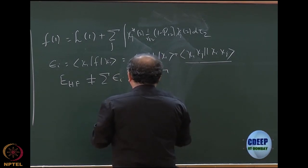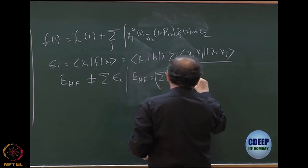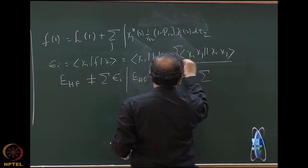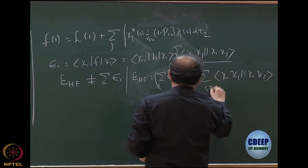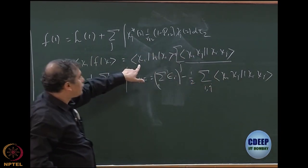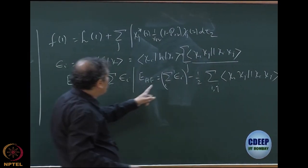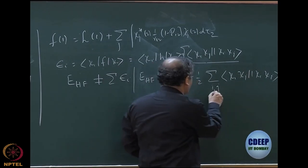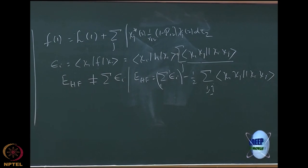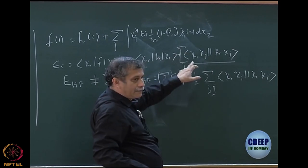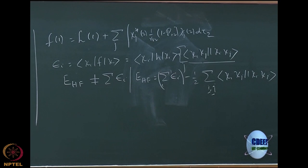The Hartree-Fock energy equals the sum of orbital energies minus half of the sum over i and j of the anti-symmetrized two-electron integrals. So when I write E_HF, it is the sum of orbital energies minus this double summation. We showed yesterday that the actual expression has this plus one-half factor. That makes it so that Hartree-Fock energy is not the sum of the orbital energies — physically, you are subtracting the double-counted interactions.